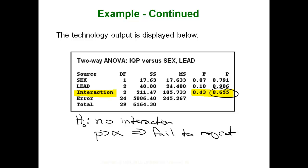Now that we see there is no interaction, we can move on and look at the row and column effects. The row was gender — the row effect seems to have no effect, that's a huge p-value. And the lead amount also seems to have no effect — another huge p-value.